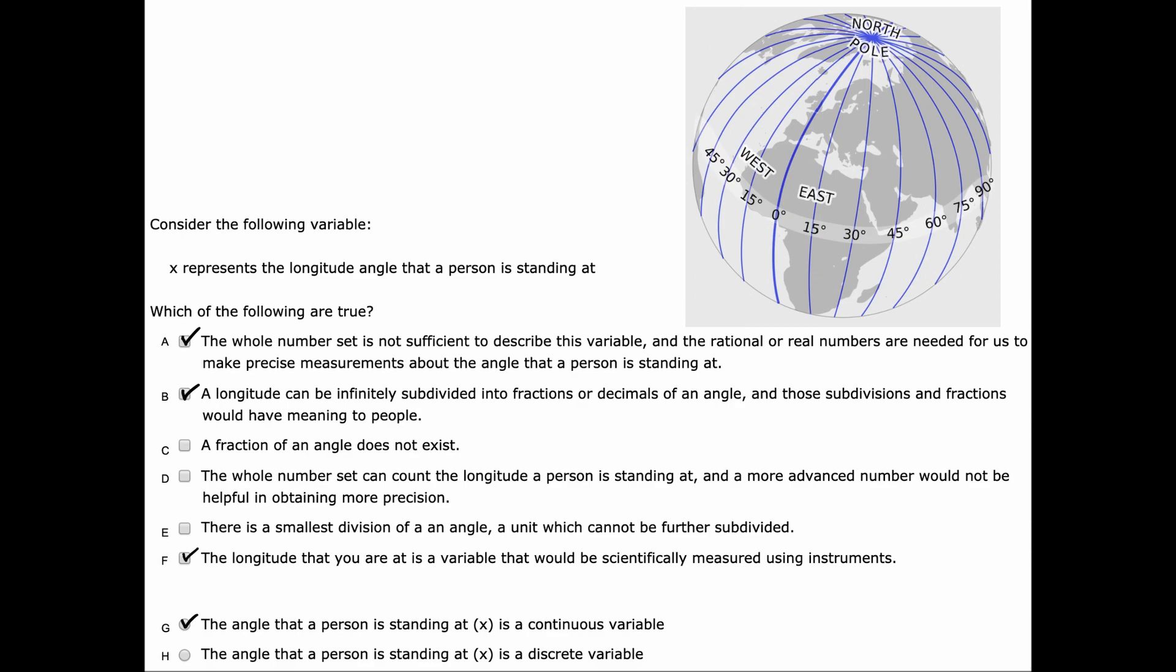The whole number set is not sufficient to describe this variable. And the rational or real numbers are needed for us to make precise measurements about the angle that a person's standing at. I also chose B. A longitude can be infinitely subdivided into fractions or decimals of an angle. And those subdivisions and fractions would have meaning to people. I chose F. The longitude that you're at is a variable that would be scientifically measured using instruments. And my conclusion was G. The angle that a person is standing at is a continuous variable.